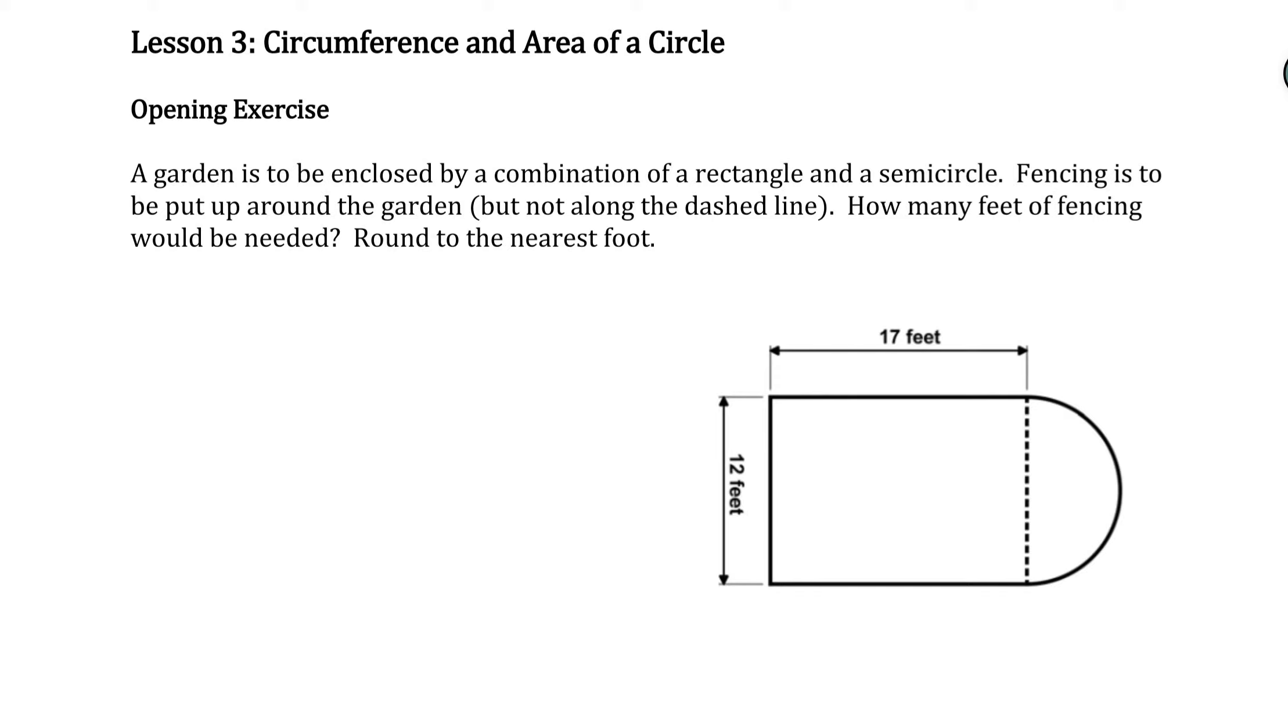The opening exercise shows us one of these composite figures where we have a rectangle and a semicircle. It says a garden is to be enclosed by a combination of a rectangle and a semicircle. Fencing is to be put up around the garden, but not along the dashed line. How many feet of fencing would be needed? Round to the nearest foot. Because we're talking about fencing along the outer edge of this garden, this question is really talking about perimeter. And remember circumference is really the perimeter of a circle.